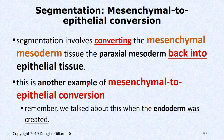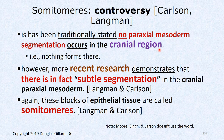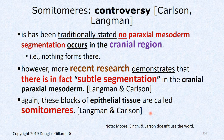There's some controversy: Carlson and Langman are the only two books that mention somatomeres. Traditionally it was stated there's no paraxial mesoderm segmentation in the cranial region, but with more powerful electron microscopes we can clearly see that's not true. Future research demonstrates there is subtle segmentation there — not as distinct as somites — and the other books need to catch up.